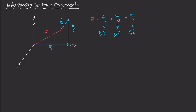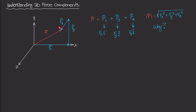In order to find the magnitude of this force, we take the root sum square of the three components. So the magnitude of F equals the square root of F of X squared plus F of Y squared plus F of Z squared. We know this works, but the big question is why — where does this equation come from when we're looking at a single force in 3D space?